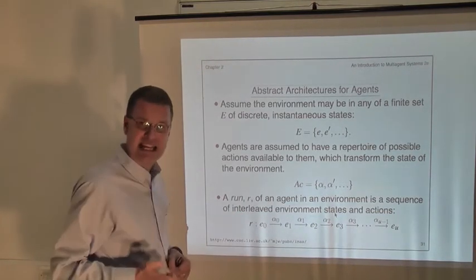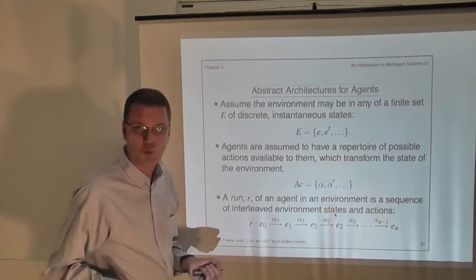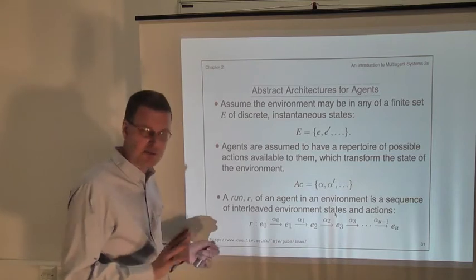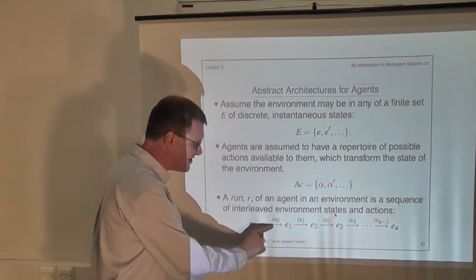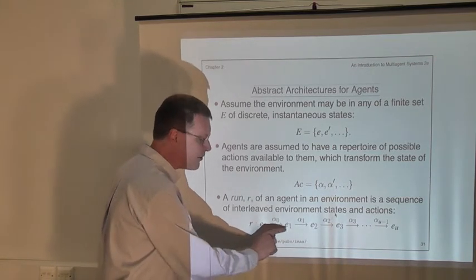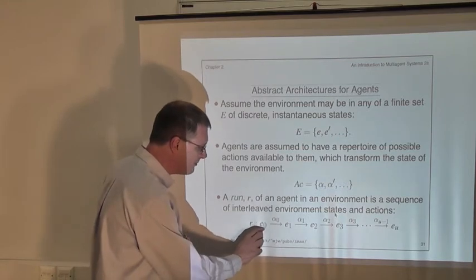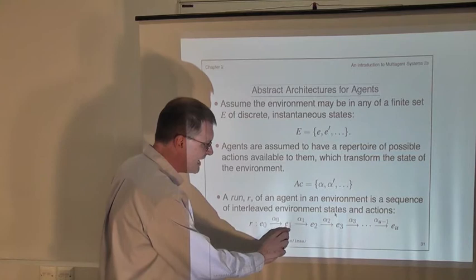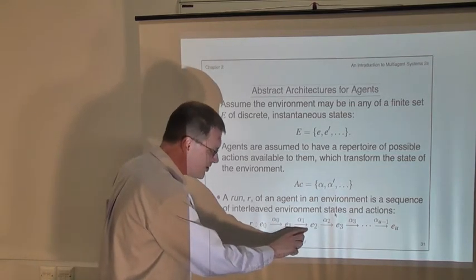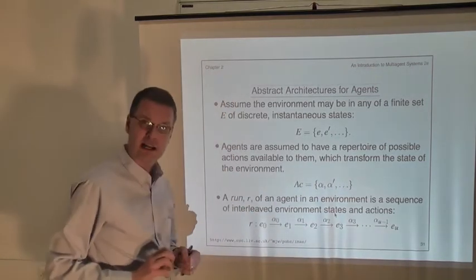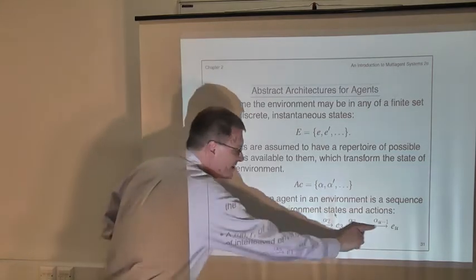The environment starts off in some state e0 — we always use e0 to denote the initial state of the environment, and we assume there is just one initial state. On the basis of that initial state, the agent looks at its environment and decides what to do. It chooses action alpha zero, performs that action, and the state is transformed — alpha zero changes environment state e0 into environment state e1. Then the agent goes through its sense, decide, act loop again, decides what to do, chooses alpha one, which changes the environment state to e2, and so on. When you put an agent together with an environment and the agent continually goes round that sense, decide, act loop, this leads to the idea of a run.